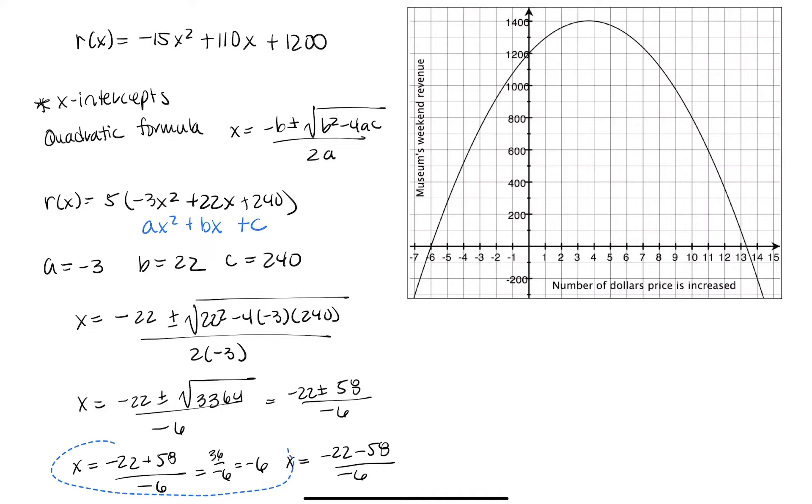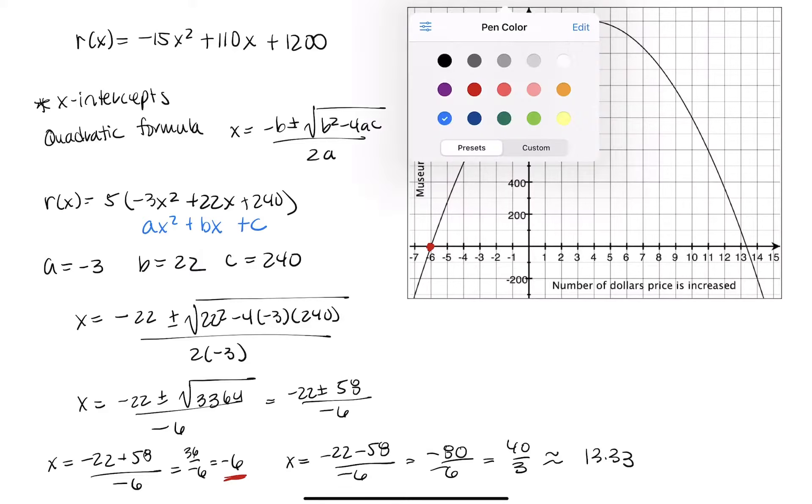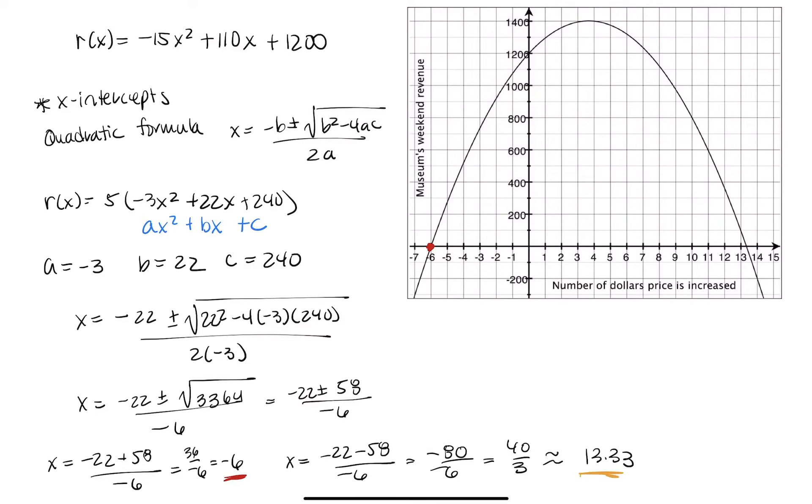Let me scooch this over for space. Now, the second one, that one's a little different. It works out to be negative 80 over negative 6, which is 40 over 3, and that approximates 13.33 to two decimal places, and these are precisely the values we found. So here's our negative 6, and then here's 13.3.